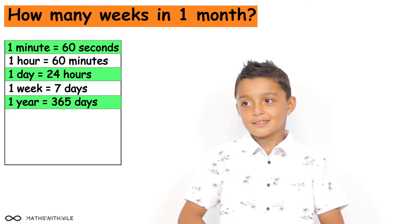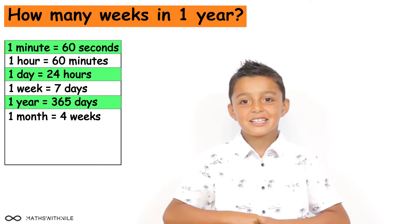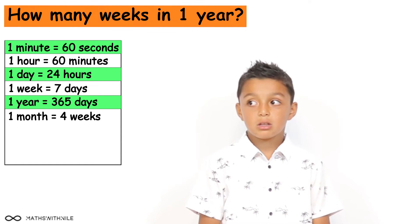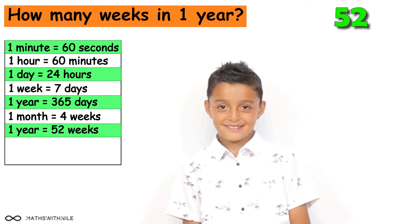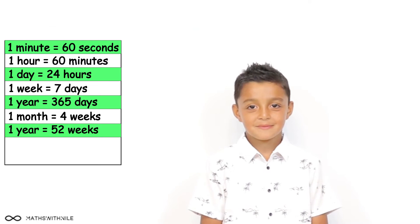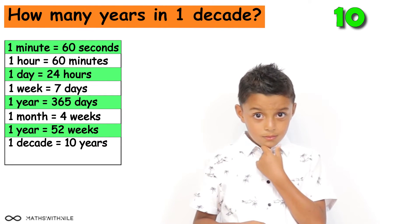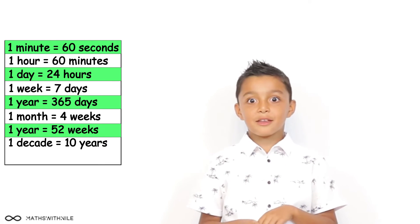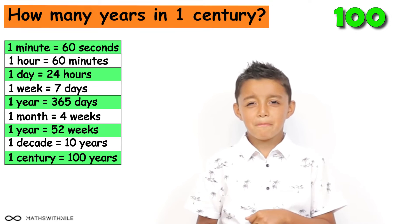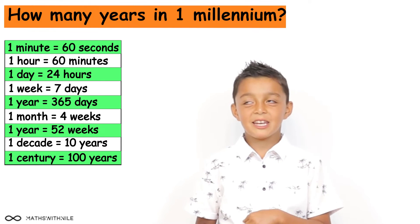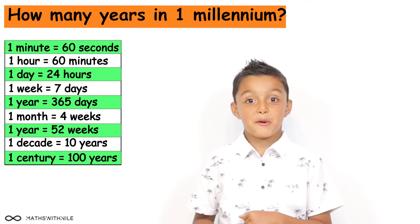How many weeks in a month? Four to four and a half. Do you know how many weeks there are in a year? 62? No, ten less. 52. 52 weeks in a year. Now, do you know how many years in a decade? Ten. And what else do you know other than a decade? A century. How many years in a century? A hundred. And a millennium? A thousand. Brilliant.